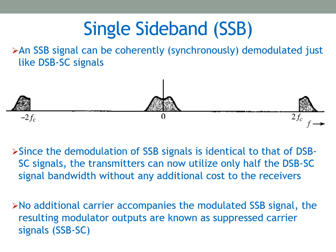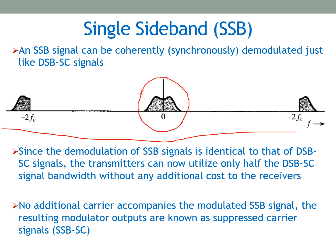A single sideband signal can be coherently demodulated. If we take a single sideband signal and multiply it with a local oscillator having the same frequency as the carrier, the spectrum at the output of the multiplier contains the baseband signal, which we can filter out since the high-frequency components are located at twice the carrier frequency. This means the same synchronous demodulator used for DSB can also be used for SSB.